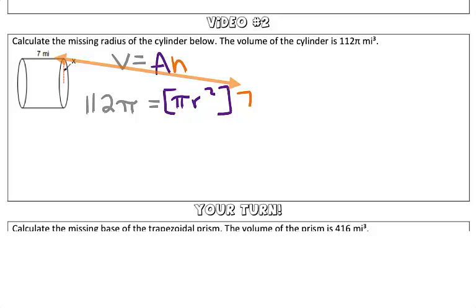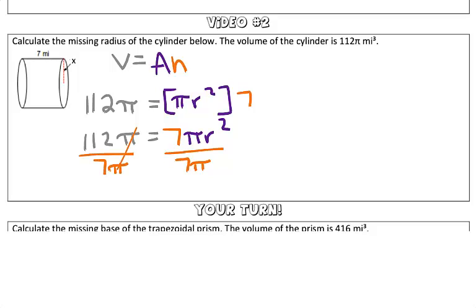Our goal is to get r by itself, or to calculate the radius. I'm going to rewrite this as 112π is equal to 7 times πr². Now, to get r² by itself, I know that I need to divide both sides by both 7 and by π, so I'm going to divide both sides by 7π.